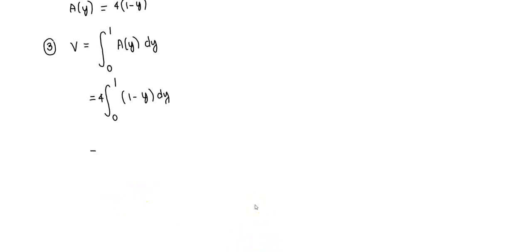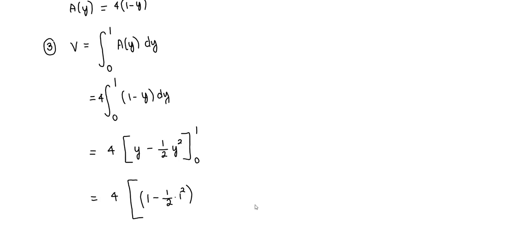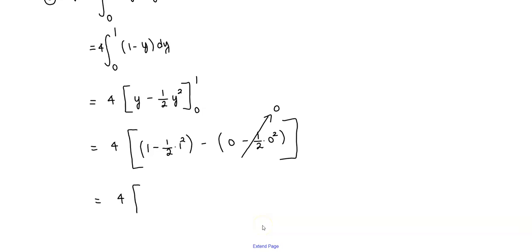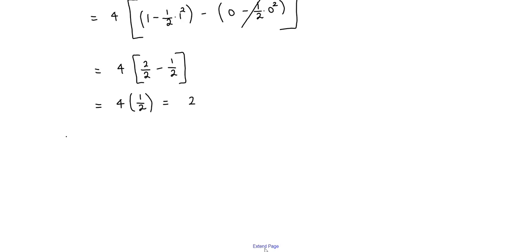Finding the antiderivative: the antiderivative of 1 is y and the antiderivative of y is one-half y squared. Evaluating from 0 to 1, we get 4 times (1 minus one-half times 1 squared) minus (0 minus one-half times 0 squared). The second part equals 0, leaving 4 times (2/2 minus 1/2), which is 4 times one-half, equal to 2. Therefore the volume equals 2.